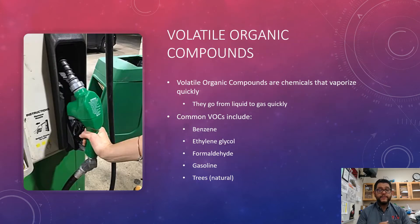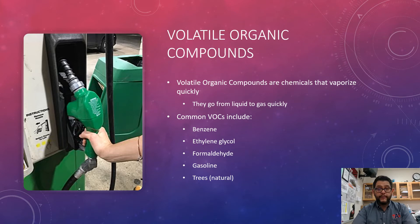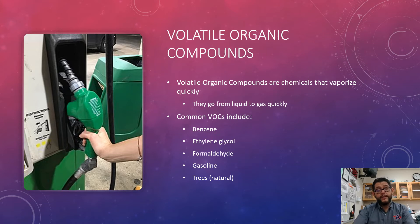As you can see, volatile organics — their sources, which we've mentioned a couple of times already — tend to be things that vaporize pretty quickly. They go from liquid to gas really fast. When we're looking at pumping gas in this picture here, that's going to release some volatile organics. You can see these in benzene, ethylene glycol, formaldehyde, and gasoline.